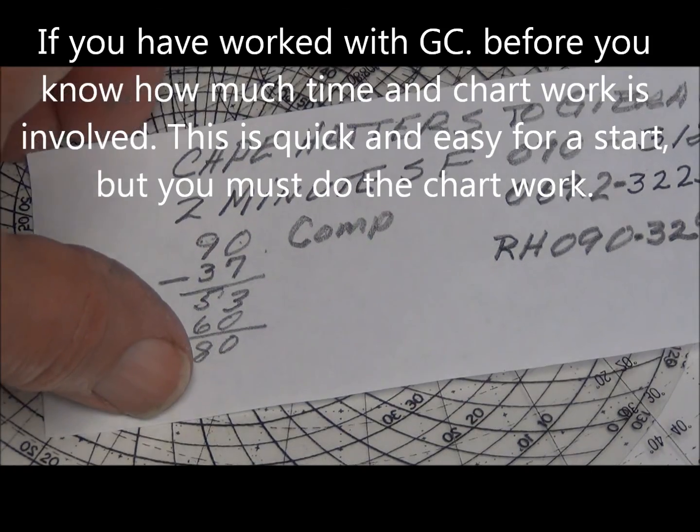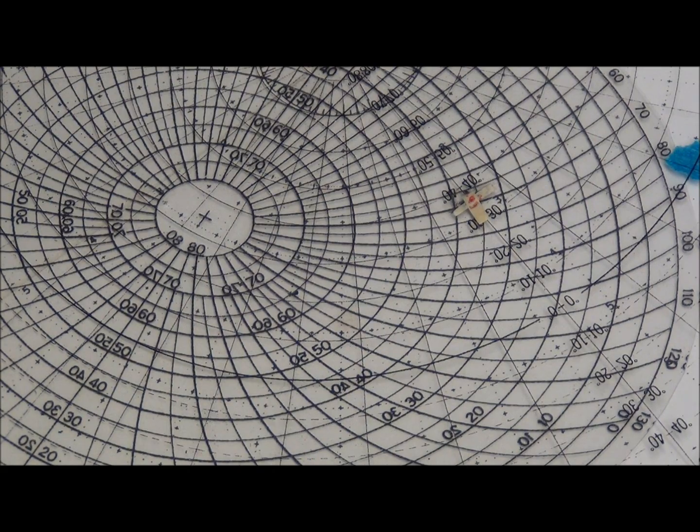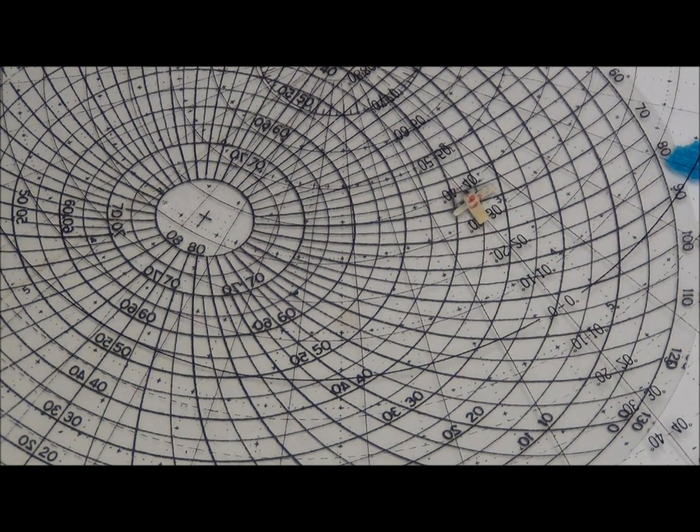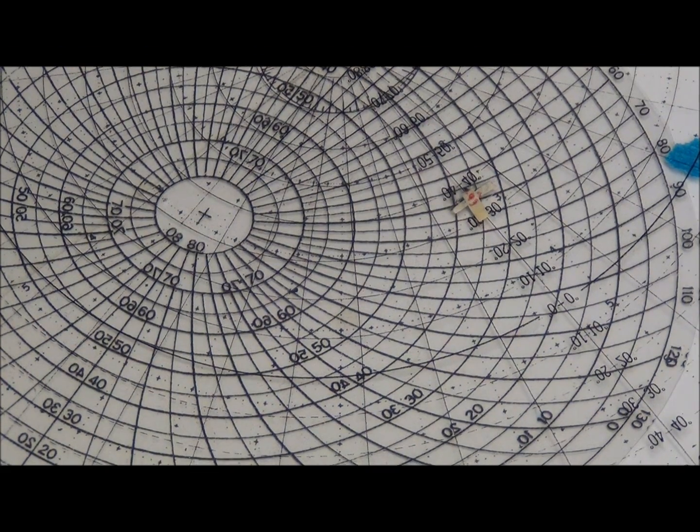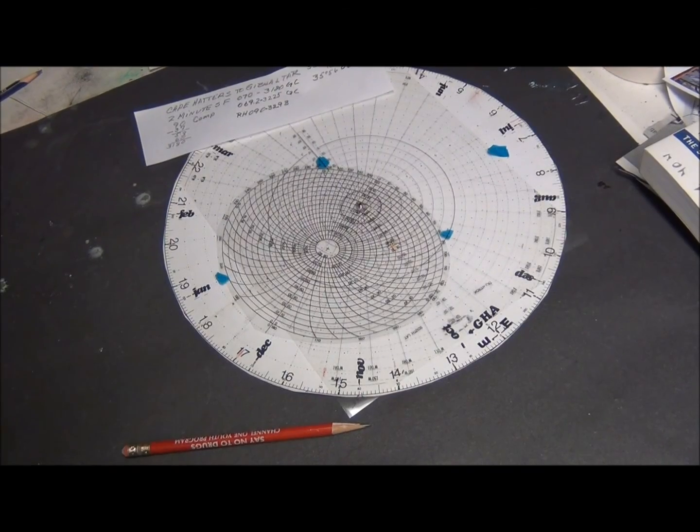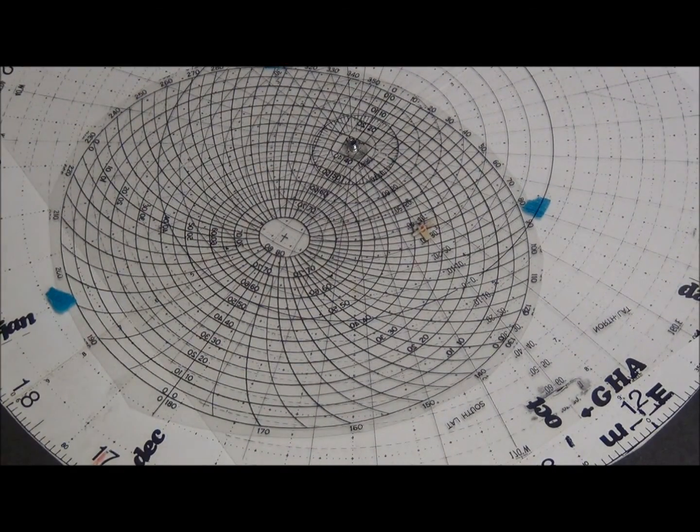Now anyone can do this with the 2-Minute Starfinder or the Root Starfinder. Of course, this should not be used for actual navigation, but to explain what the situation is and how the Great Circles work, it's a fine way of looking at things. So give it a try.